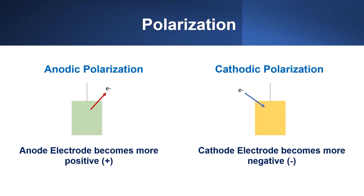Both anodes and cathodes can be polarized. The anode can be polarized by donating electrons, whereas the cathode can be polarized by accepting electrons.